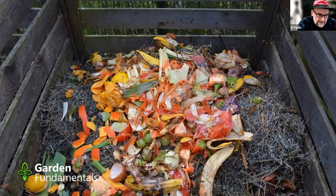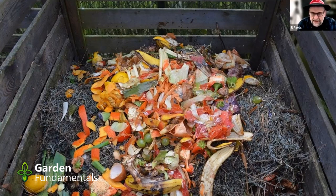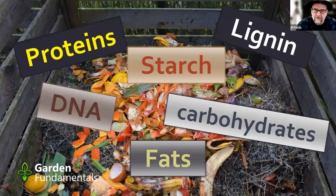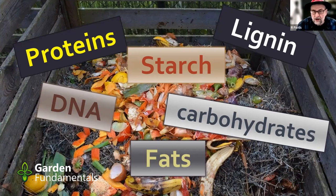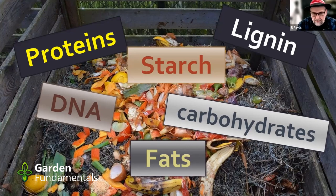I can see a lemon, an eggshell, a tomato piece, some grapes, and some banana skins. They're all plant structures — plant cells still in their original structural form. Inside those cells we have all kinds of molecules: some are nutrient molecules like potassium and nitrate, but many are very large molecules — things like protein, starch, carbohydrates, fats, and lignins. Lignin is a special type of carbohydrate material that gives plants strength and structure — it's what makes a tree stand upright.